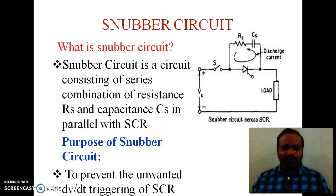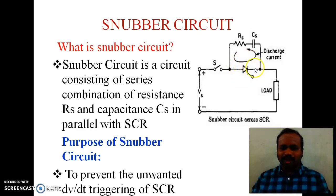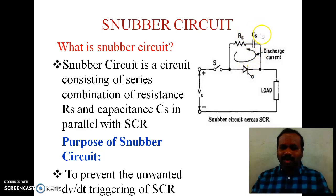The purpose of the snubber circuit is to prevent the unwanted dV/dt triggering of the SCR. Whenever the supply is connected to the thyristor, if the rate of rise of voltage increases, then the thyristor will get an unwanted trigger. In order to avoid this malfunction, we must control the dV/dt which appears across the thyristor. We connect a capacitor in parallel with the thyristor because the capacitor does not allow any sudden change of voltage — it will allow only a slow increase of voltage.